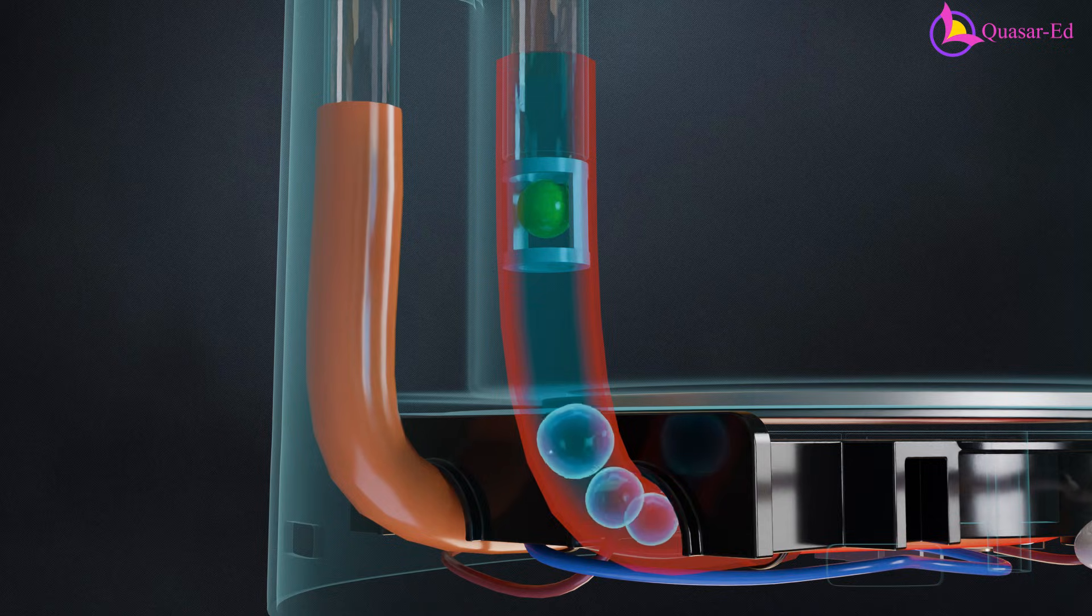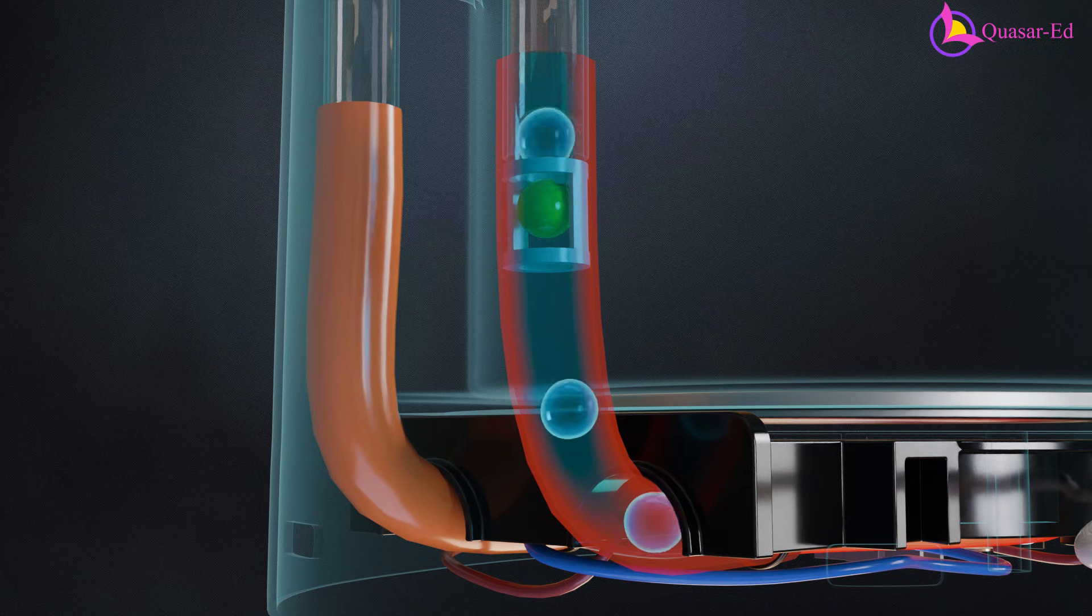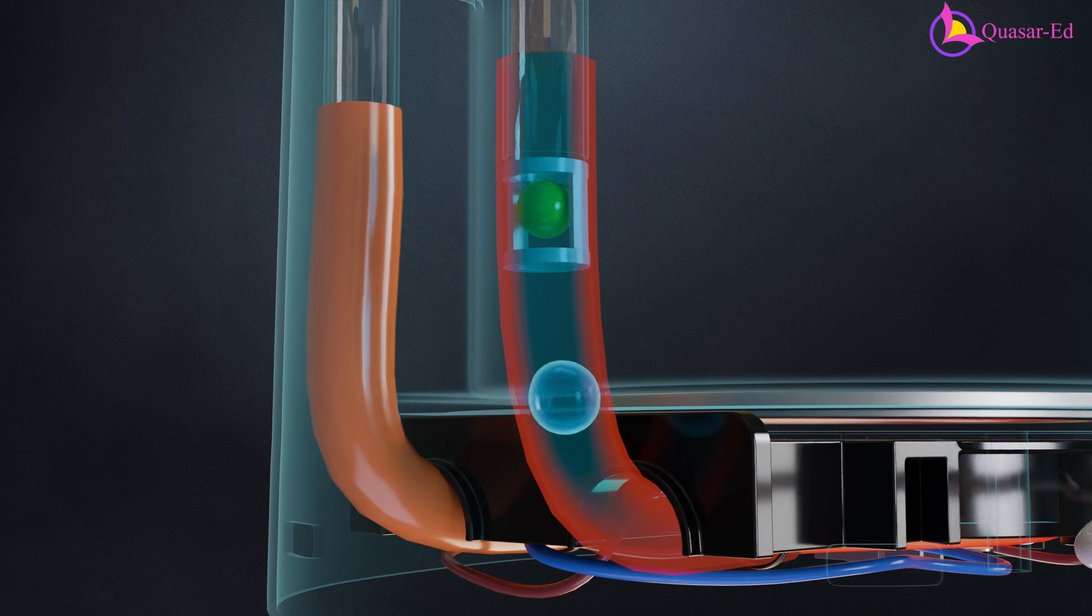This tiny ball acts as a simple one-way valve. When bubbles push the water upward, it lifts the ball and lets the water pass. But when the bubbles collapse and the water tries to fall back down, the ball drops into place and blocks the flow.